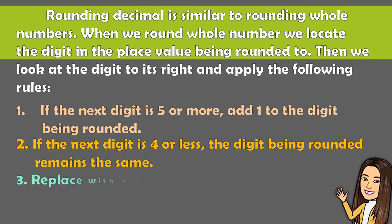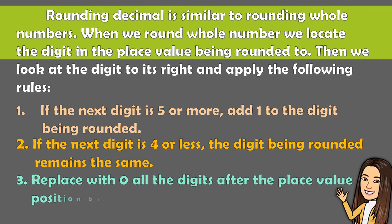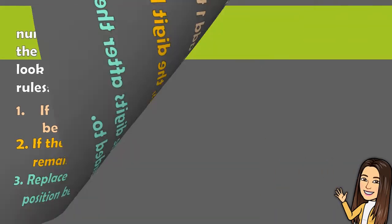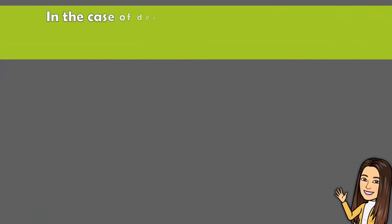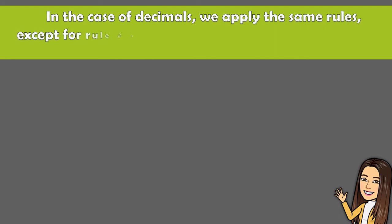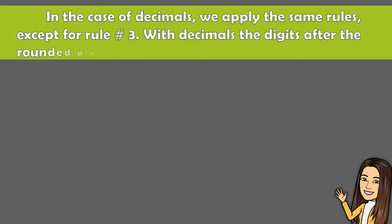And rule number 3, replace with 0 all the digits after the place value position being rounded to. In the case of decimals, we apply the same rules except for rule number 3. With decimals, the digits after the rounded place are discarded.